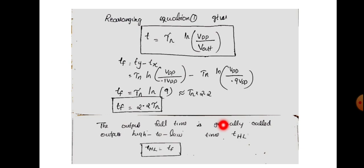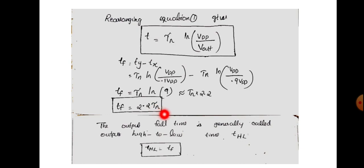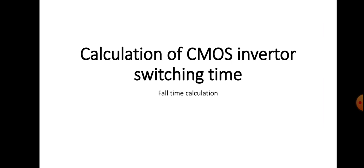The output fall time is generally called the high-to-low time, represented as THL. THL is equal to TFN, which equals 2.2 times the time constant τn. This is how we derive the fall time equation. In the next video, we will be discussing the rise time calculation.